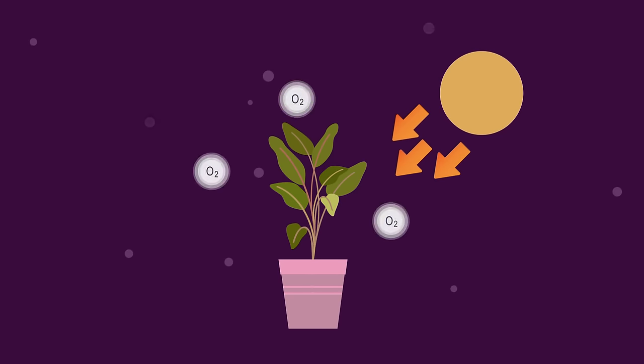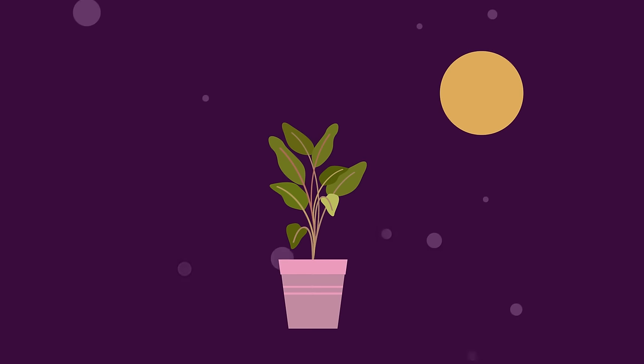Whilst plants do release oxygen as a by-product of photosynthesis, they don't necessarily take in this oxygen for respiration. They just take in any oxygen from the air.